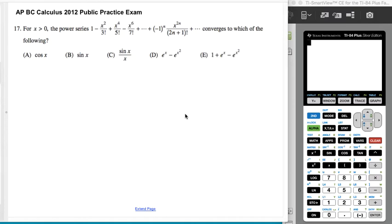All right, so we're given for x is greater than zero, there's a power series. It looks a lot like the sine series, except the degrees are wrong.